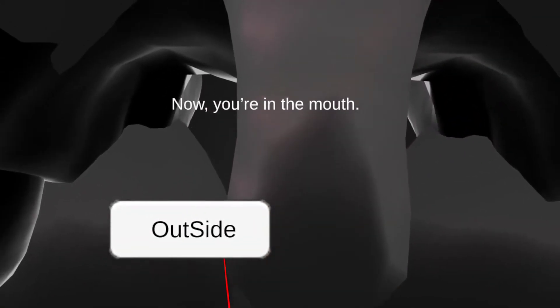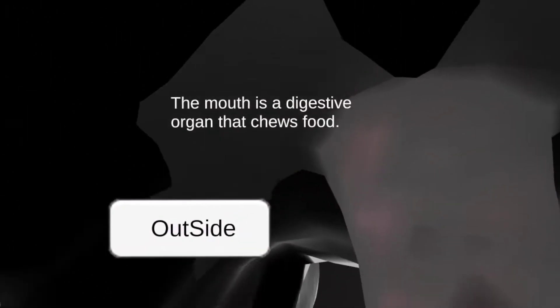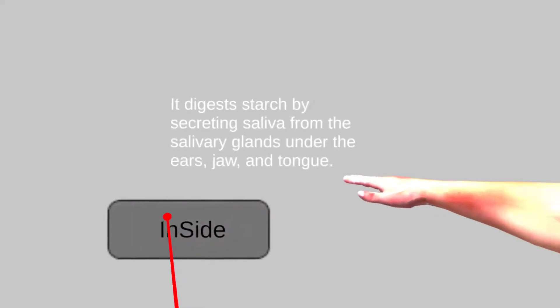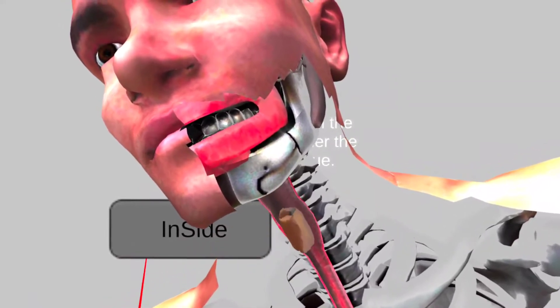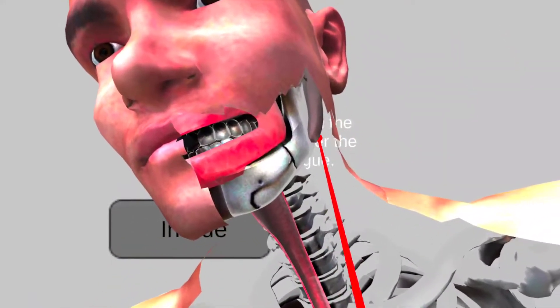Now, you're in the mouth. The mouth is a digestive organ that chews food. It digests starch by secreting saliva from the salivary glands under the ears, jaw, and tongue.